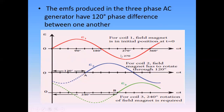So three different EMFs are produced: Epsilon 1, Epsilon 2, and Epsilon 3. The three-phase generator produces three EMFs with a phase difference of 120 degrees with each other.